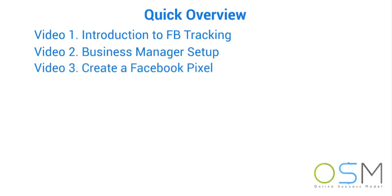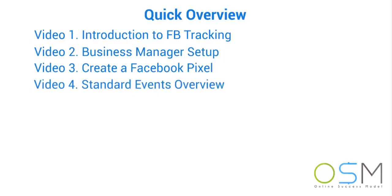In video number three we're going to talk about the actual Facebook pixel and how you go about creating them. Then in video number four we talk about what's called standard events. Standard events are what allow you and Facebook to figure out who's coming to your website and what they're doing — are they just a visitor, are they buying something, are they filling out a form? Whatever it is you want to track, it allows you to figure out what people are doing in your funnel and whether your funnel is ultimately working or not.